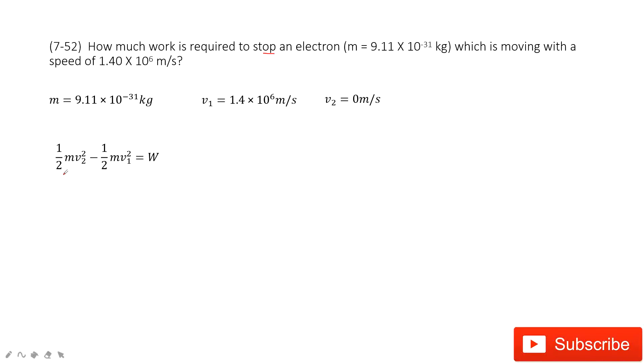So in this one, the final kinetic energy is 1/2 m v₂² minus the initial kinetic energy 1/2 m v₁² equals the work W.